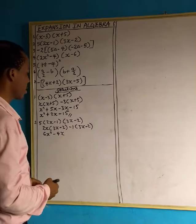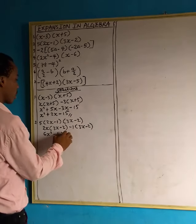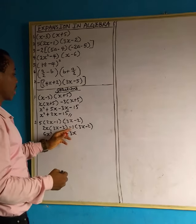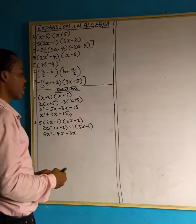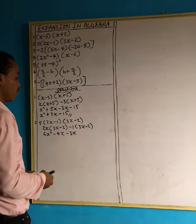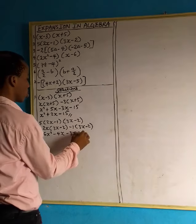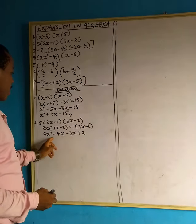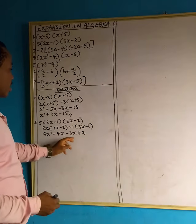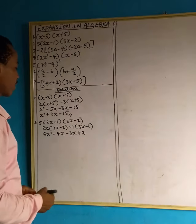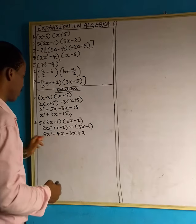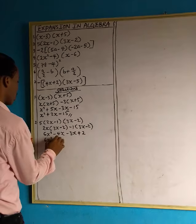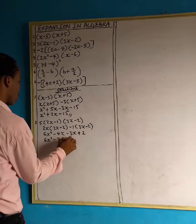Minus 1 multiplied by 3x gives us minus 3x. Then minus 1 multiplied by minus 2 — these are both negative numbers, and when you multiply them it becomes positive — so we have positive 2. These are like terms: minus 4x minus 3x. Minus minus is plus, so 4x plus 3x gives us 7x, and we attach the negative sign. So we have 6x squared minus 7x plus 2.